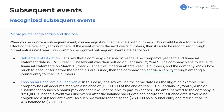The amount owed to the company is $250,000 — that's a pretty big deal. We don't have a strict materiality threshold, but 25% of your accounts receivable is pretty material. Since this event was discovered after the balance sheet date but before the issuance date, it would be considered a subsequent event. As such, we would recognize the $250,000 as a journal entry and reduce year one's AR balance from one million to $750,000, because it affects year one.